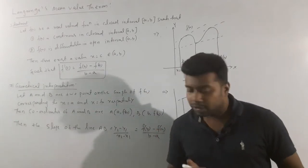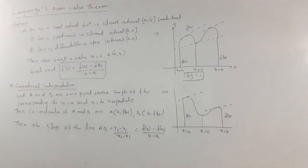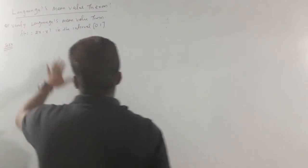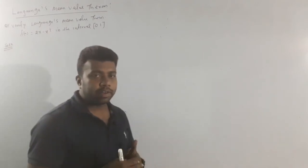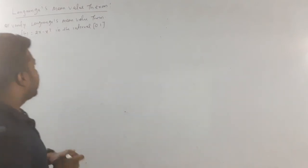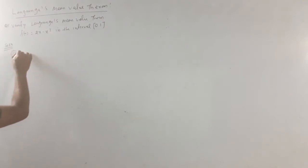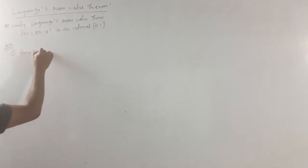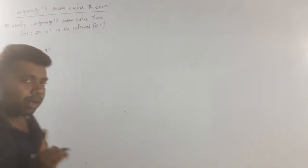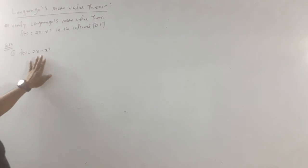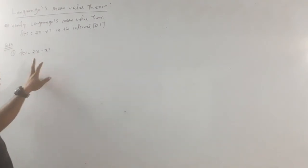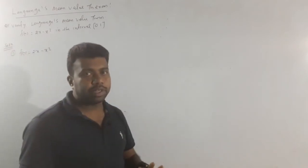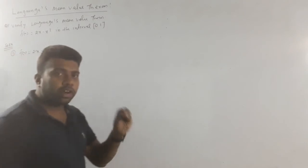From the exam point of view, note down the theorem. We have verified the theory. The question is: verify Lagrange Mean Value Theorem step by step. Here, f of x is 2x minus x squared. Step 1 is the continuity check. f of x is a polynomial function.